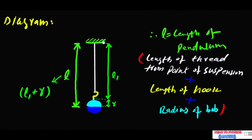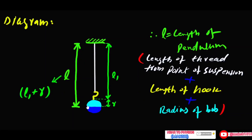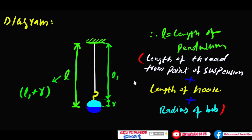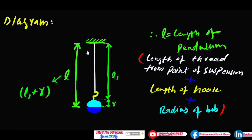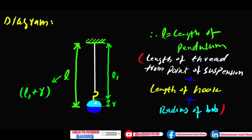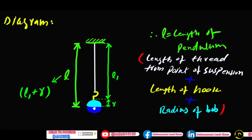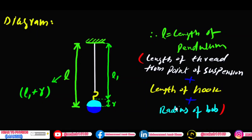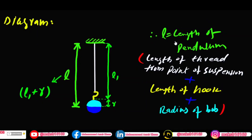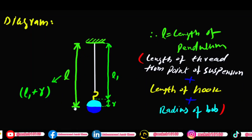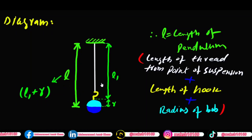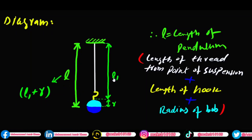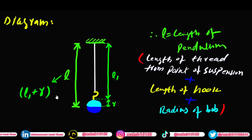Diagram میں ہمارے پاس ایک simple pendulum ہے۔ اس کا support ہے، support کے ساتھ ایک thread ہے، آگے hook ہے اور hook کے بعد bob ہے۔ یہاں تک bob کا radius ہے۔ Pendulum کی جو length ہوتی ہے وہ دراصل thread plus hook plus radius of bob کے equal ہوتی ہے۔ Total length L دراصل L1 (thread plus hook) plus radius of bob کے برابر ہوتی ہے۔